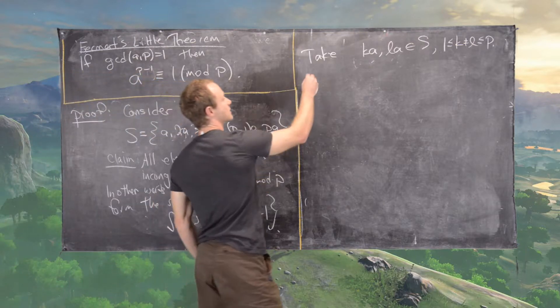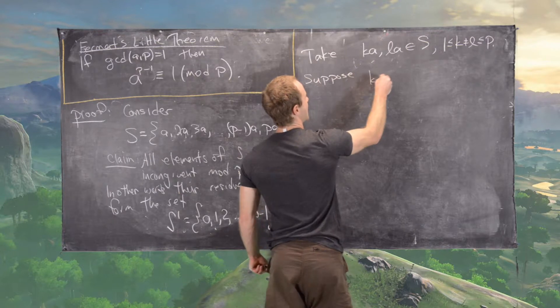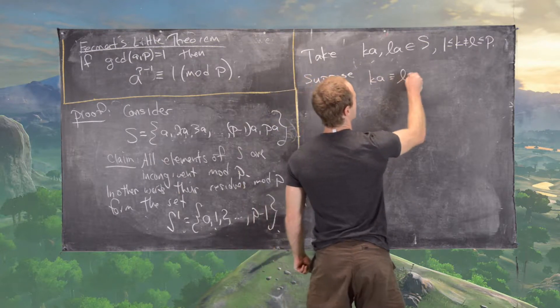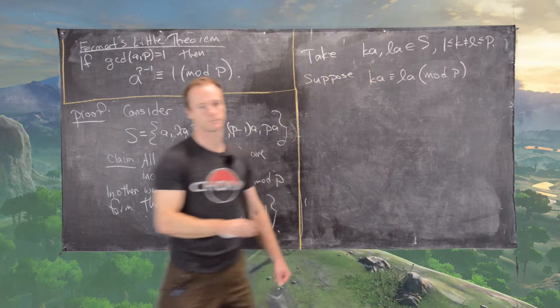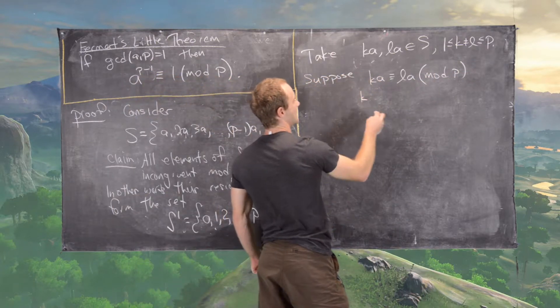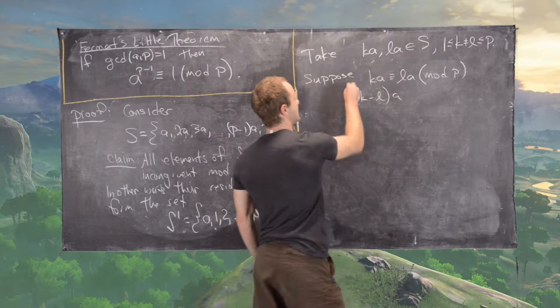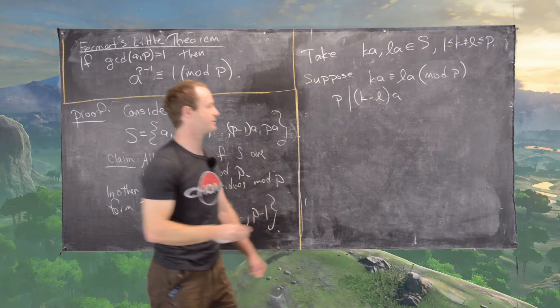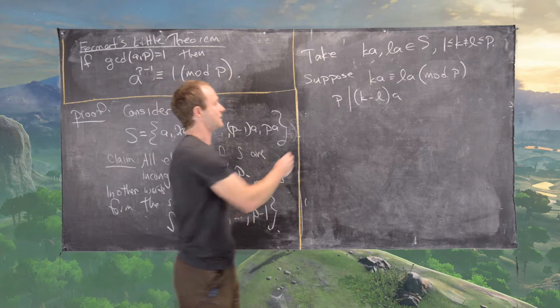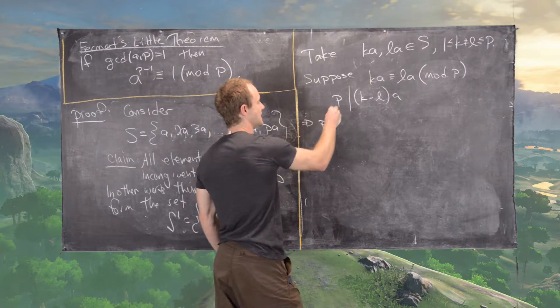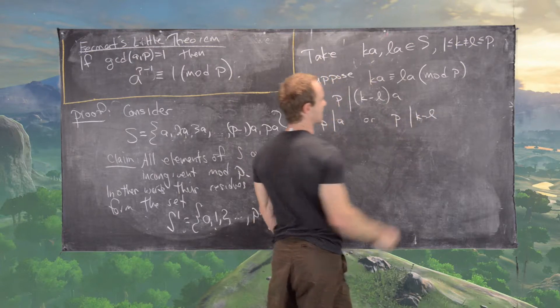And now let's suppose that K times A is congruent to L times A mod P. But that means that K minus L times A is divisible by P, just using the definition of congruence modulo P. But that tells us that P divides A or P divides K minus L.